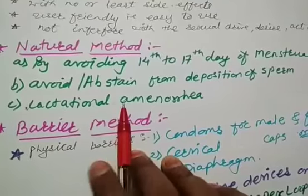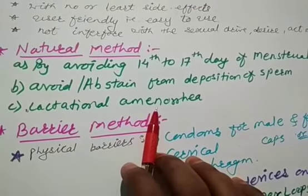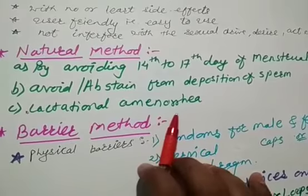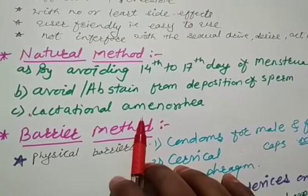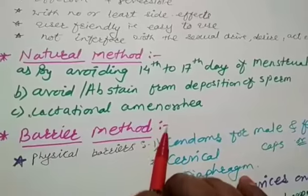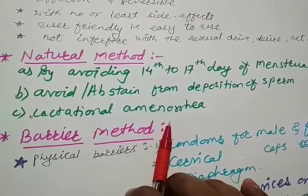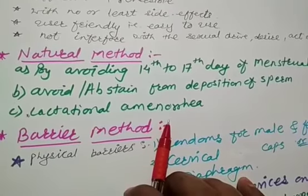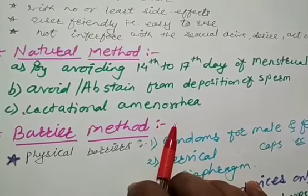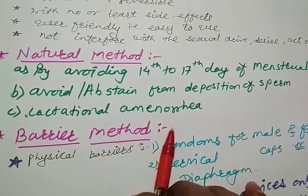Third method we will see, that is lactational amenorrhea. Now lactational amenorrhea, that is absence of menstruation. In this method, it is based on the fact that ovulation and the cycle do not occur during period of intense lactation during following parturition.